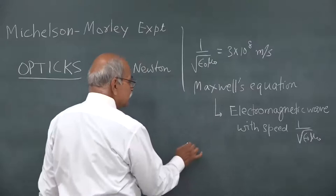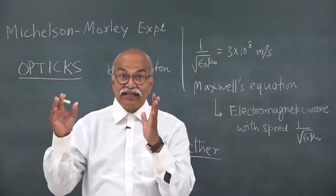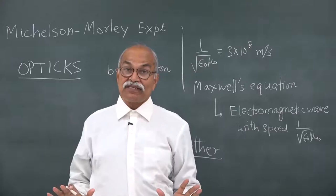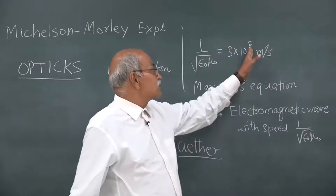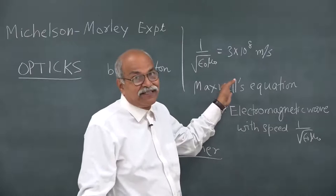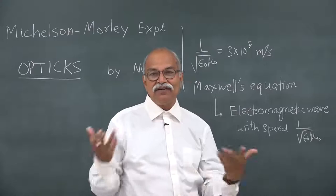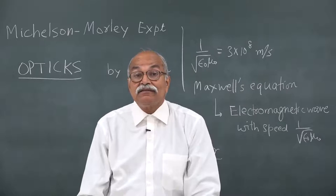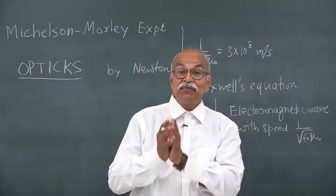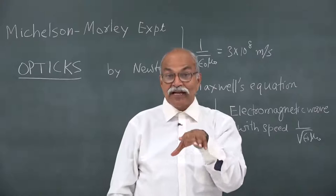That is how the idea of aether came in — there should be a medium, and people named that medium aether. The search was on to locate that aether, and it was assumed that it would be at absolute rest, since that is the frame in which light has the specified speed and Maxwell's equations should be correct. In that scenario, Michelson came up with a fantastic idea: how to measure the speed of earth in that so-called aether — and that is the Michelson-Morley experiment.